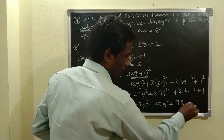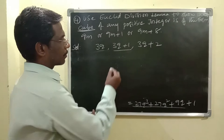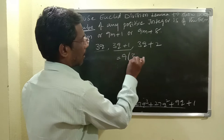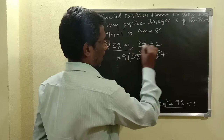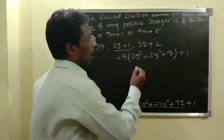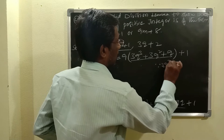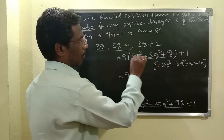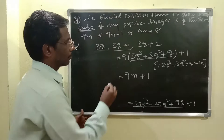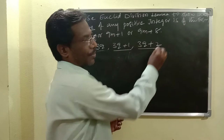Now taking 9 common from the first three terms, we get 9 times 3Q cubed plus 3Q squared plus Q, plus 1. Assuming the bracket term 3Q cubed plus 3Q squared plus Q equals M, we can write 9 times M plus 1. So A cubed equals 9M plus 1.